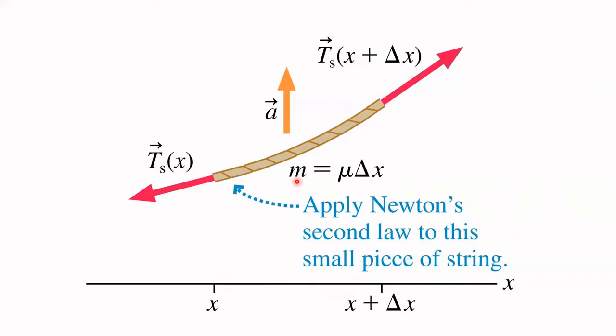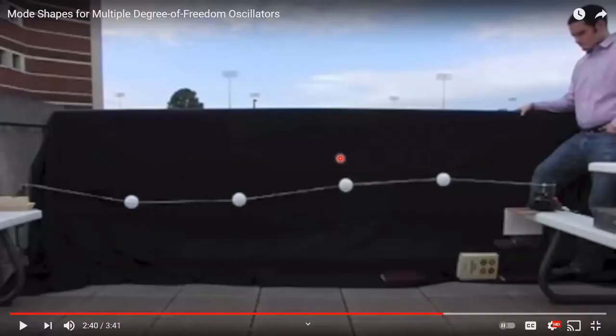If we know the linear mass density of the string, we just multiply by the length of this little piece to get its mass in kilograms. In non-SI units, say the string weighs 0.02 ounces per inch — you could convert that into kilograms per meter. I know weight and mass are not the same thing, but in SI units that would be kilograms per meter — the linear mass density.